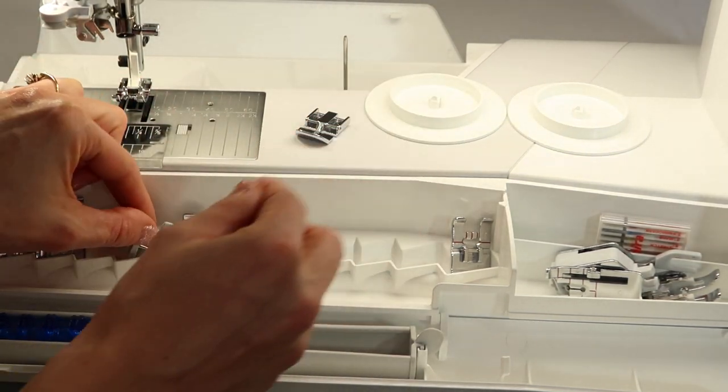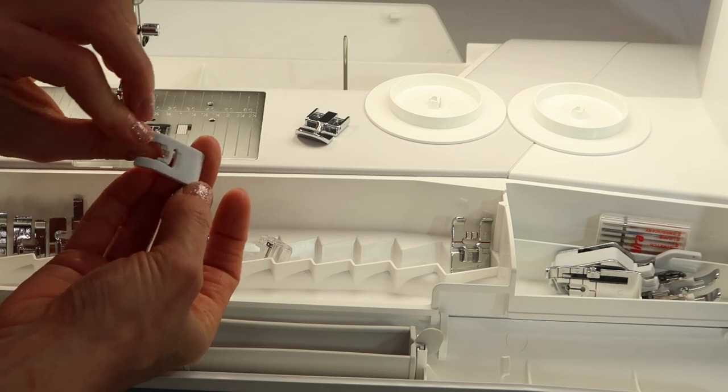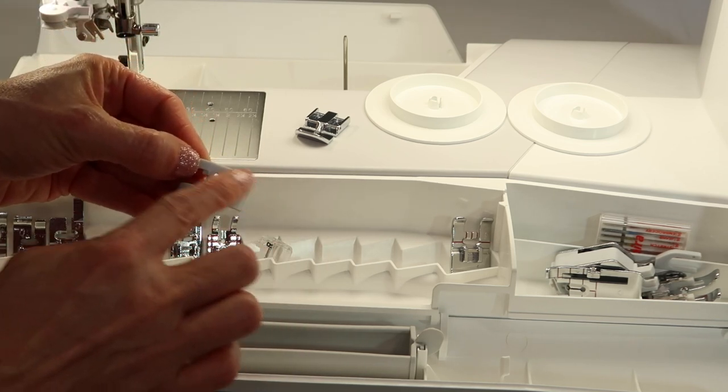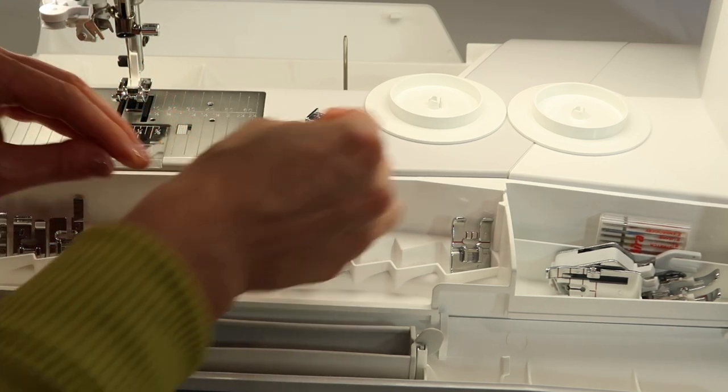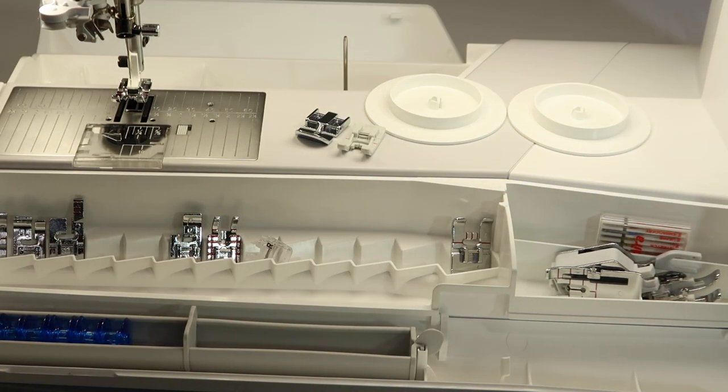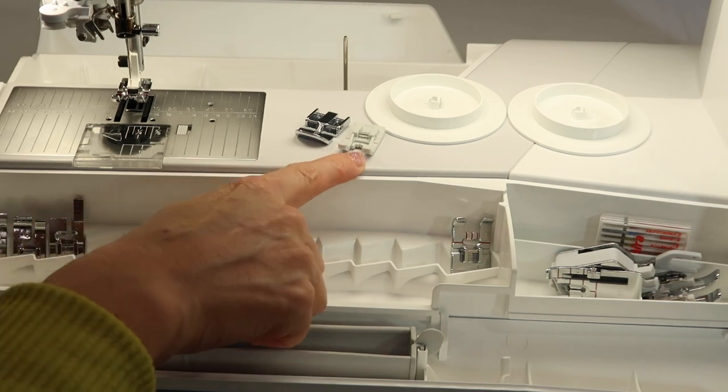We have zipper feet. We have feet that have a white base so it is actually set up to sew on leather or vinyl. If you tell the machine that you have leather or vinyl as your sewing fabric, it will switch over to the H foot.